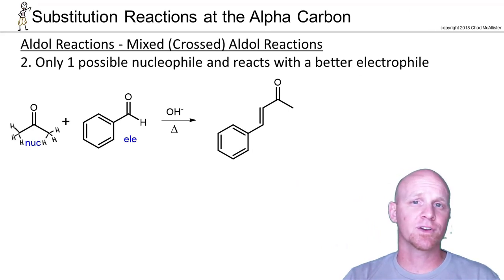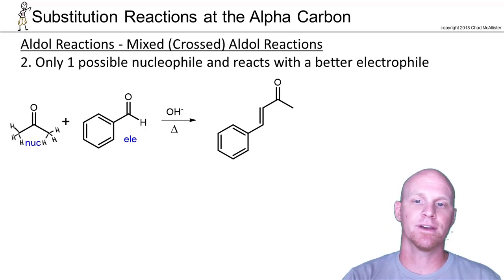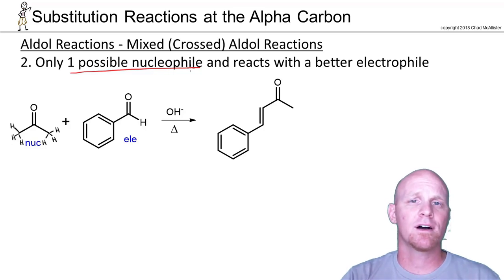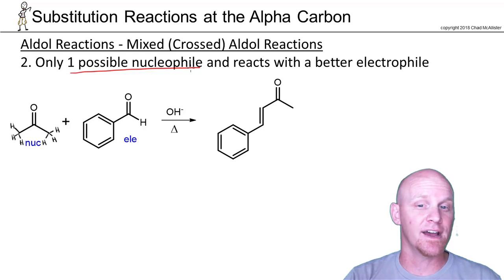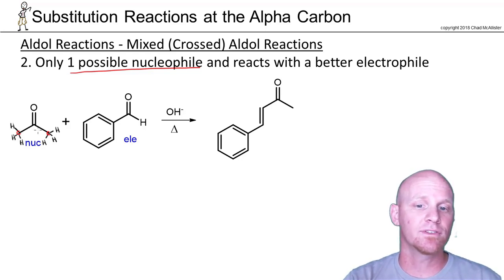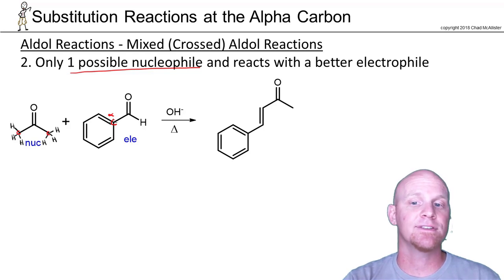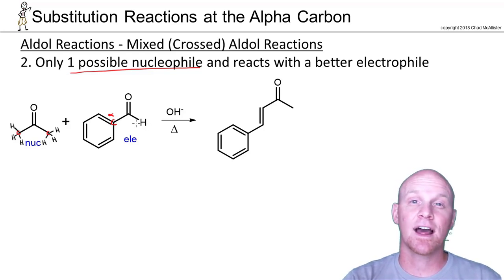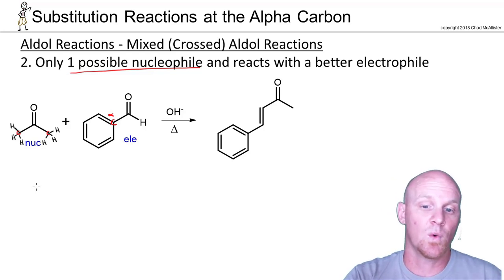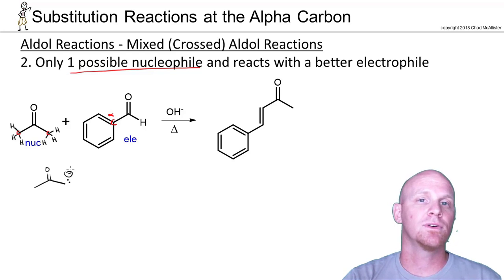The second way to get a good yield of a single product in a mixed aldol reaction is to choose your reactants very carefully. You want one possible nucleophile, meaning only one type of enolizable alpha hydrogen. For example, acetone has alpha hydrogens on both alpha carbons, but they're exactly equivalent due to symmetry, so there's only one type of alpha hydrogen. Benzaldehyde, on the other hand, has no alpha hydrogens at all — the H attached to the carbonyl itself is not on an alpha carbon. So the only enolate that can form is acetone's enolate, and there's only one possible nucleophile regardless of which alpha carbon is deprotonated.